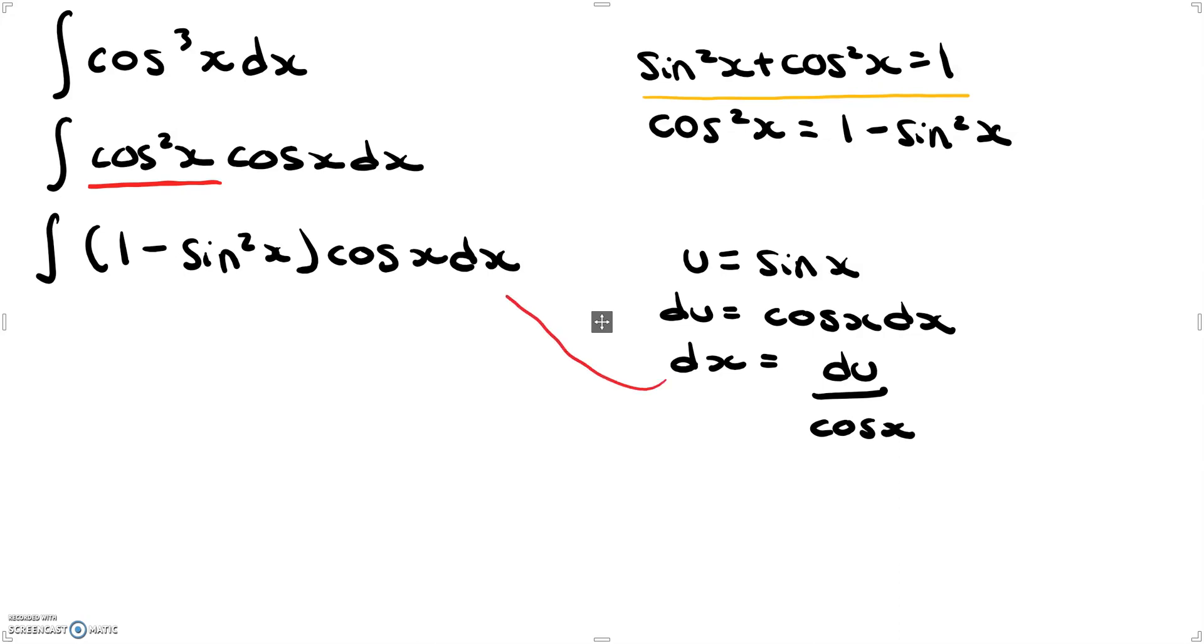If we take this and substitute it back into dx, we get the following: 1 minus u squared cosine x, du divided by cosine x. Now we can see here that cosine x cancels out, and that we get 1 minus u squared du.